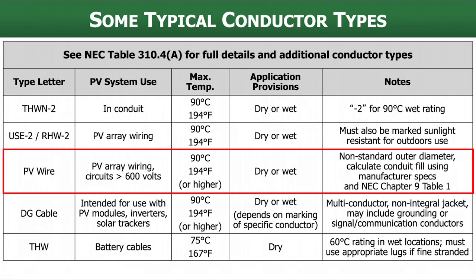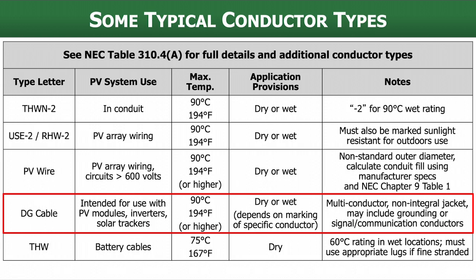Another PV-system-specific conductor type is DG cable — distributed generation. This is for use with modules, inverters, and trackers. A common application is as part of a listed cable assembly that goes along with some types of micro inverters. It can have different numbers of conductors — it's a multi-conductor jacketed cable that could include grounding wires and signal and communication wiring. There's a lot of flexibility for what goes inside. Just like PV wire, it's not in Table 310.4A because it is somewhat new and doesn't yet have a wide range of applications outside the solar industry.